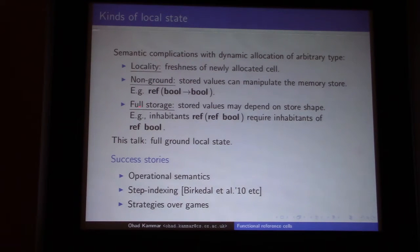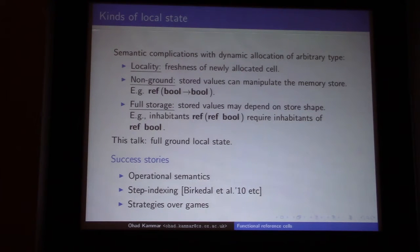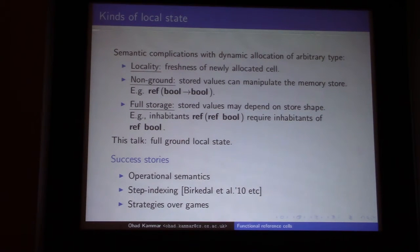The last axis is full storage — whether you can store values in memory that depend on the shape of the memory. The example is a reference to a reference to a bool. So I can only store a reference to a bool, a reference to a reference to a bool, if I already have some reference to a bool. If I don't have any references to a bool in my memory, I can't store a reference to that — assuming I don't have null pointers. So these are like ML references.